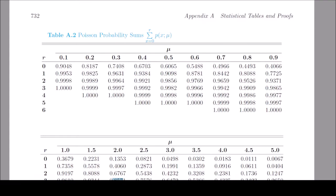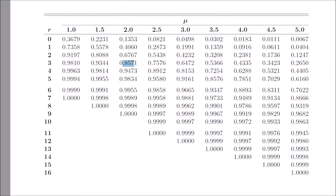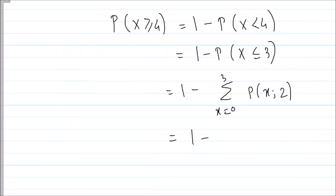Using the table: the table gives cumulative Poisson probabilities. In our case the mean is 2, and we need X from 0 to 3. From the table, the cumulative value for mu equals 2 and R equals 3 is 0.8571. So the answer is 1 minus 0.8571, which gives 0.1429. Be careful to check whether your table gives individual probabilities or cumulative ones.